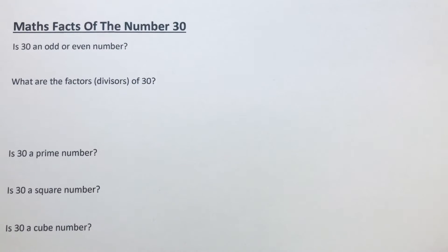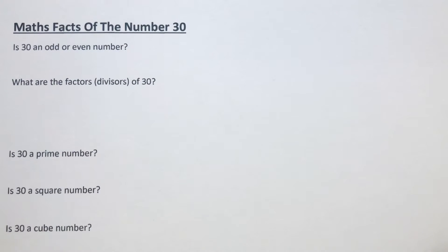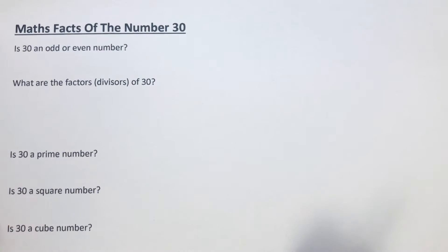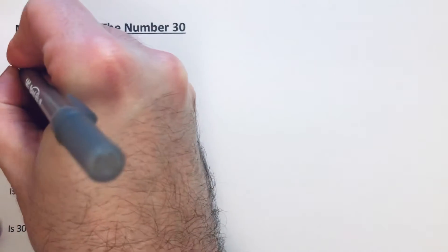Hi guys, welcome back. This is Maths 3000. Today I'm going to show you all the maths facts of the number 30. So first of them, is 30 an odd or an even number? Well, it's an even number because it is in the two times table: 15 times 2.